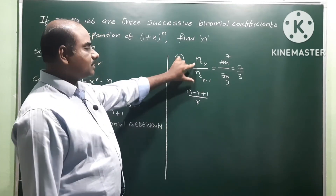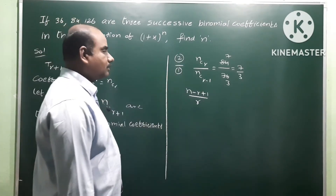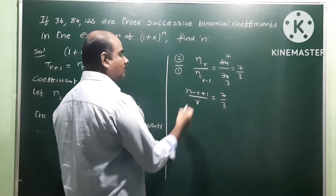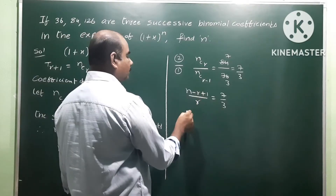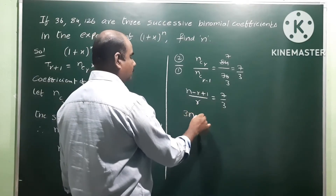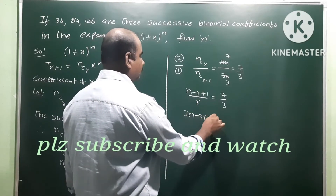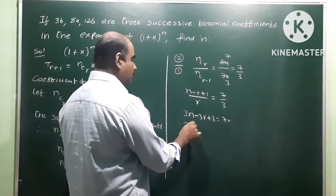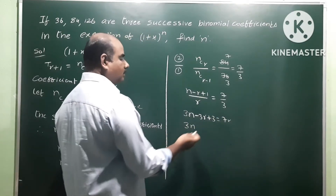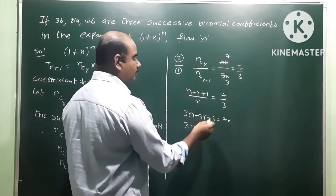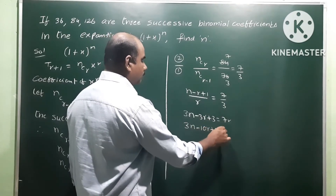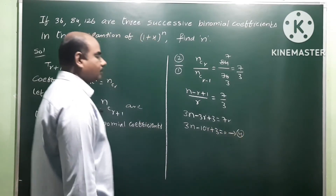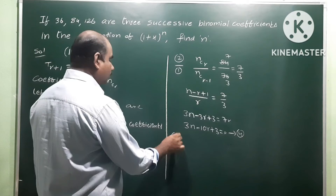Cross multiplying: 3(n - r + 1) = 7r, giving 3n - 3r + 3 = 7r, so 3n - 10r + 3 = 0. This is equation 4.